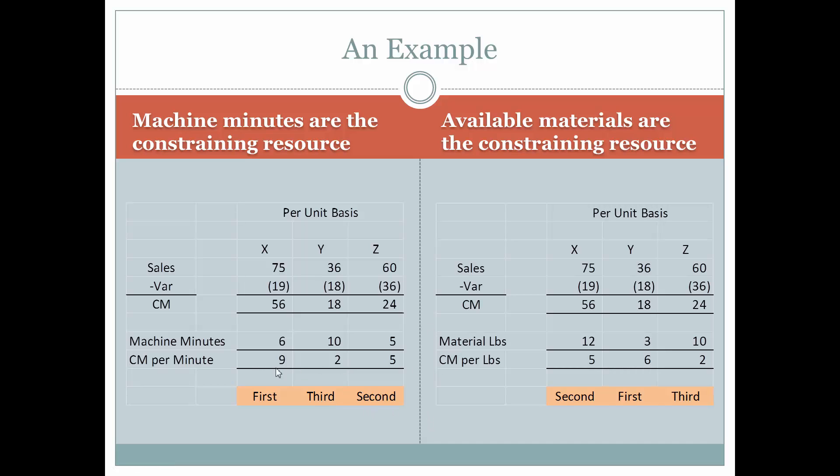Now let's look and see if something different, using a different example, if the constrained resource is number of material pounds. So the constraining resource is the fact that they can only order or obtain so many pounds per month. So now we have the same sales, variable expenses, and contribution margin for these same products. But now we have a different dynamic or a different constraining resource.